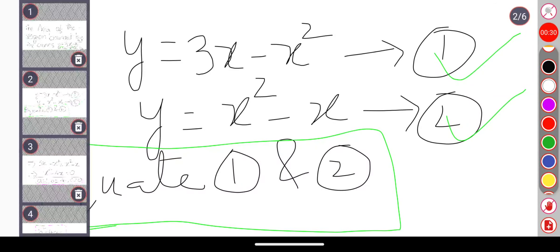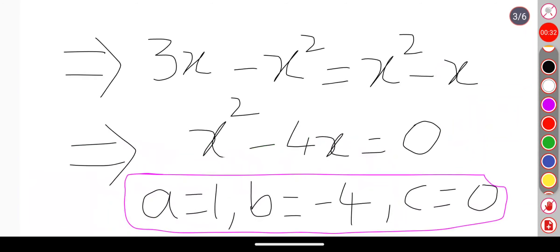When we are equating equation 1 and 2 we are getting the quadratic equation like x squared minus 4x. So if we compare this quadratic equation with our standard form ax squared plus bx plus c equal to 0, we can get a value as 1, b value as minus 4, and c value as 0.